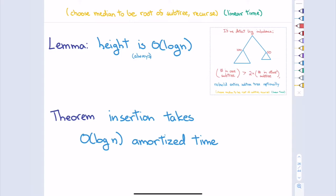The insertion then is very simple: insert at leaves just like usual, update some counters going back up the tree, and if I find one subtree is a lot bigger than the other, I just rebuild the whole thing. Clearly the worst-case running time is not great because I might have to rebuild. But I will argue that the amortized running time is still O(log n) — on average you'll still get log n performance, like you'd get from AVL trees or red-black trees.